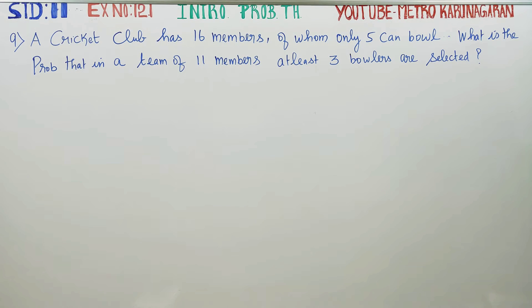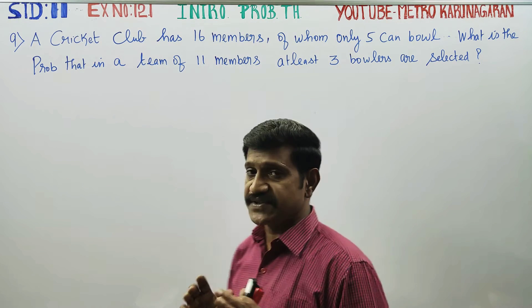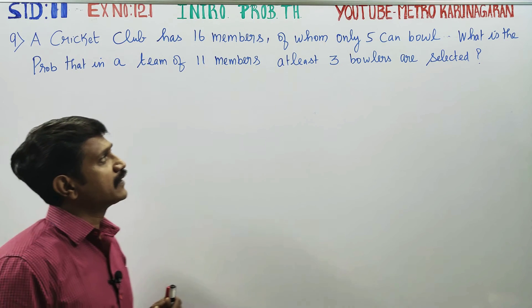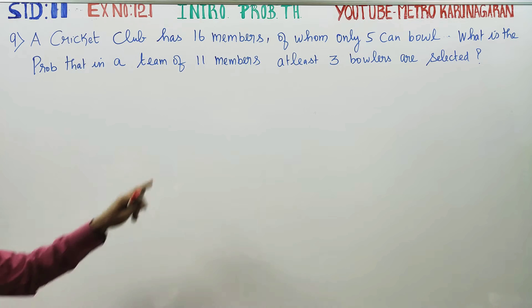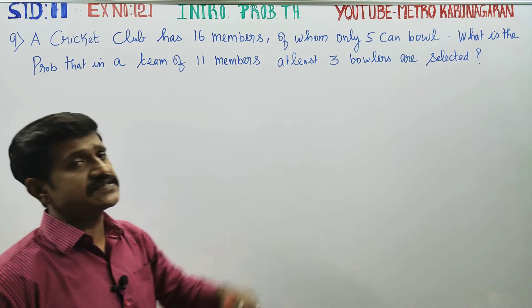Dear 11th standard students, in exercise number 12.1, sum number 9, a cricket club has 16 members and only 5 can bowl. What is the probability that team of 11 members is selected, at least 3 bowlers are selected. 11 members are selected, 3 bowlers are selected.